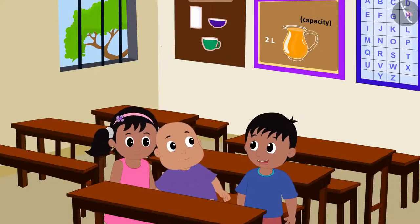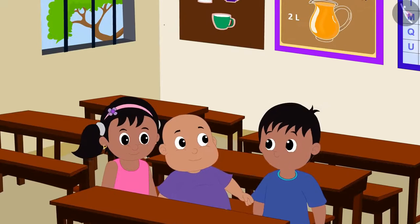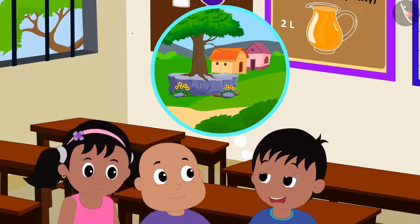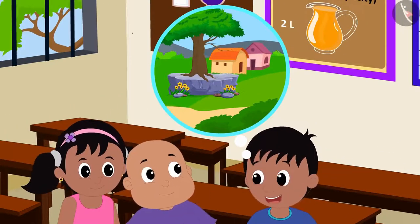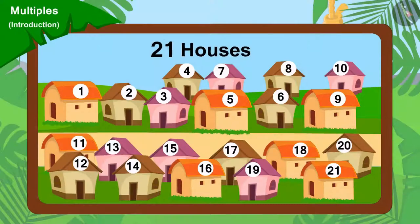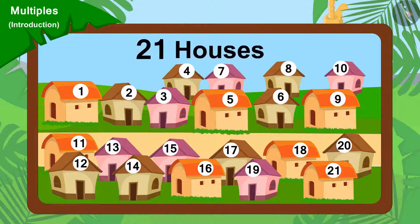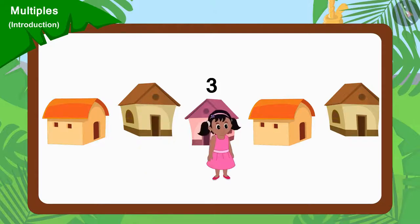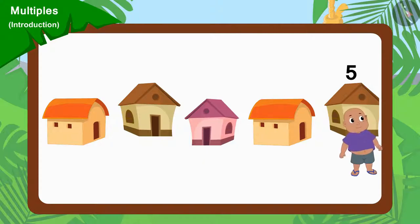Raju told Pinky and Bablu a plan. He said that they would not go to the same house but go to different houses. There are a total of 21 houses in the village. Raju will go to every second house, Pinky will go to every third house, and Bablu will go to every fifth house.